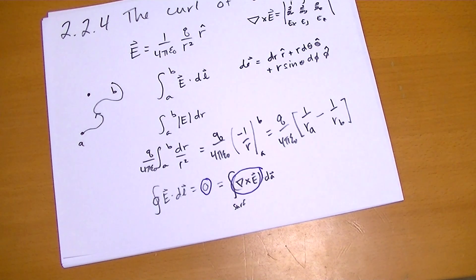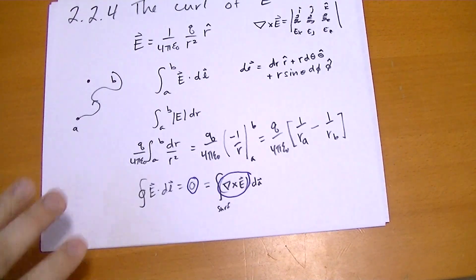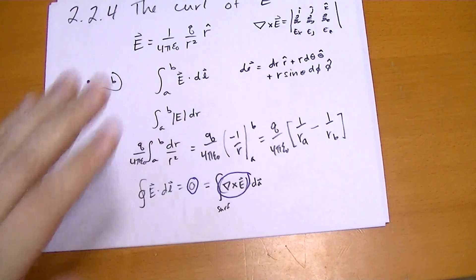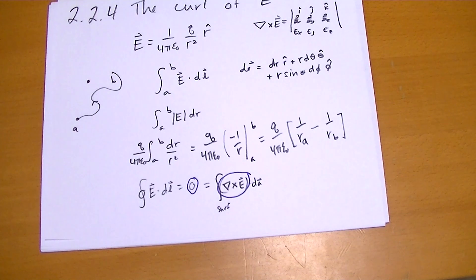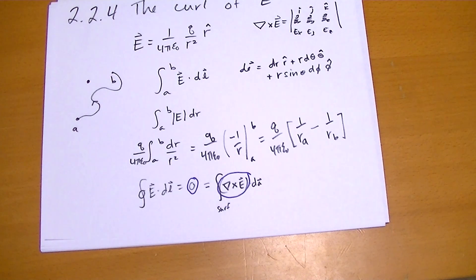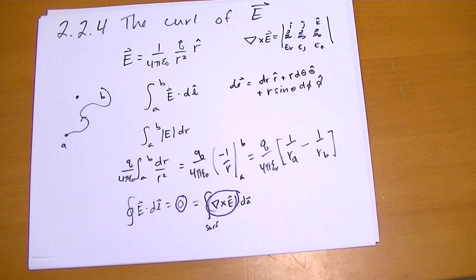Although we did this for one point charge, the electric field follows the principle of superposition. It doesn't matter how many point charges you have or how they are distributed. You can take each electric field due to each point charge independently — the curl of each is zero — so the curl of all of them summed together is also zero, thanks to the distributive property of the curl.